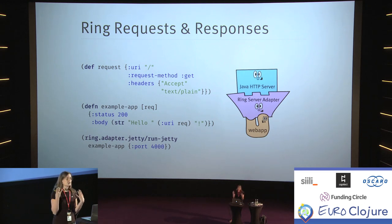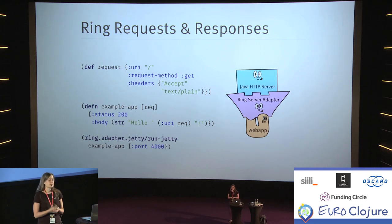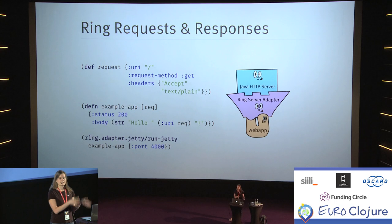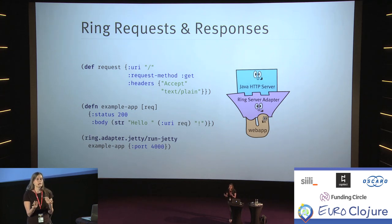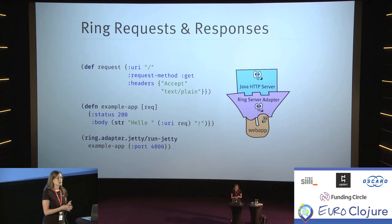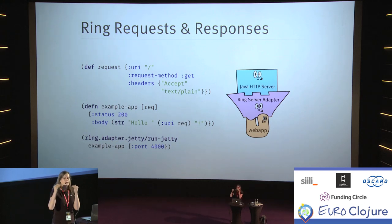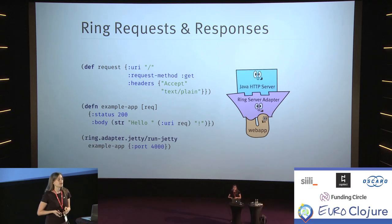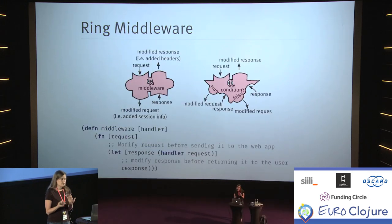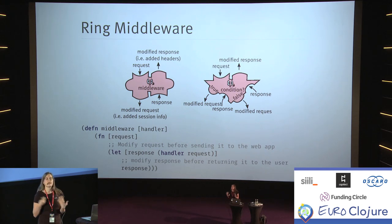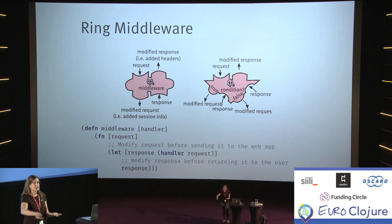Ring is a server abstraction. We can define requests as data — as a map — and we can define responses as data — as a map. We just create a function that follows the contract, with the fields we need for our application. As long as we follow this contract, we can plug it into the adapter layer, which performs a translation between the contract and the server instance underneath it, and it will work. We also notice that there are a lot of patterns that repeat themselves. Maybe every time we get a response, we want to set a security header. Maybe every time we get a request, we want to add session information.